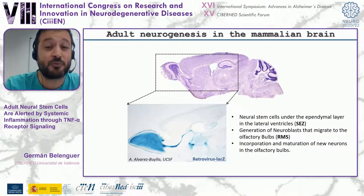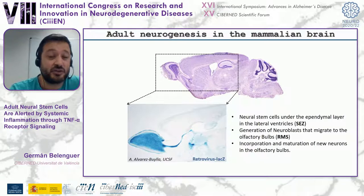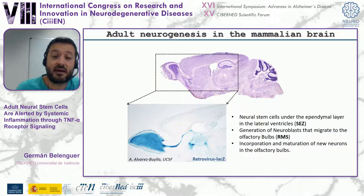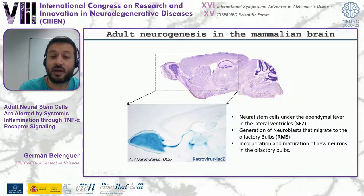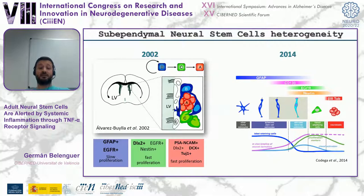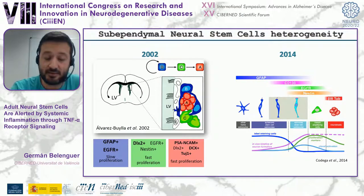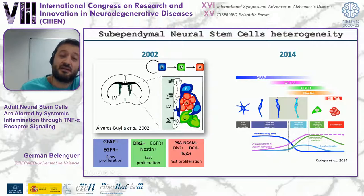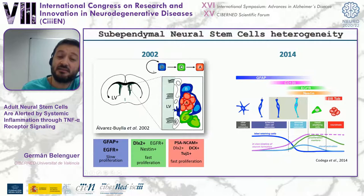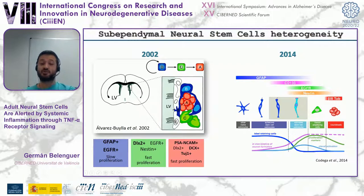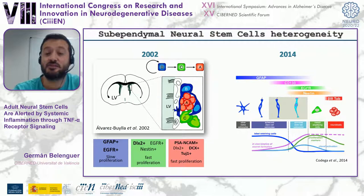In the lab of Professor Isabel Fariñas, we are interested in understanding the function and regulation of adult neural stem cells localized in the subventricular zone, which are responsible for generating new neuroblasts that migrate via the rostral migratory stream to the olfactory bulb. Before you can study how these stem cells function, you need to identify them. When I joined the lab ten years ago, all that was known was that there exist GFAP-positive astrocytic cells with slow-cycling abilities able to generate fast-proliferating progenitors that produce new neuroblasts.